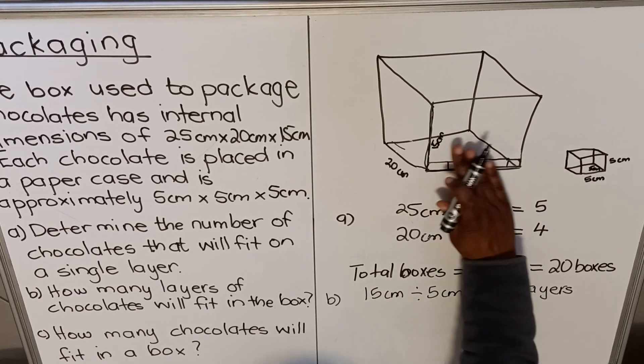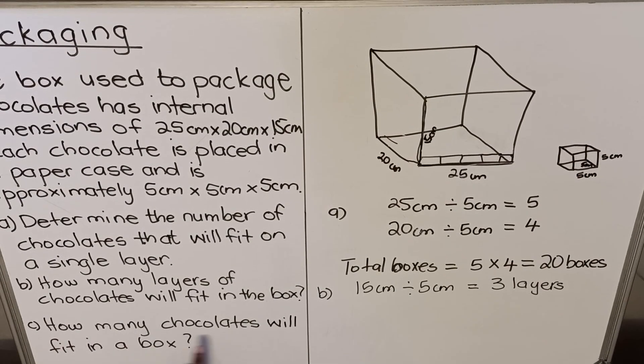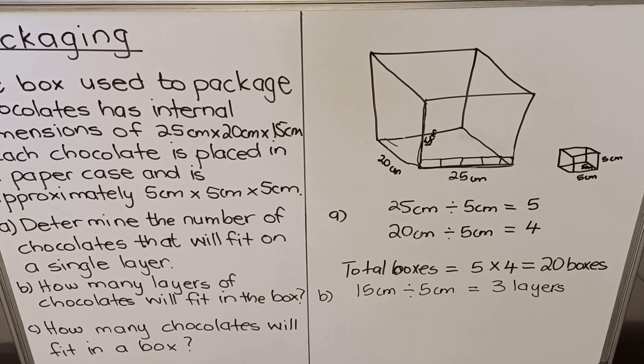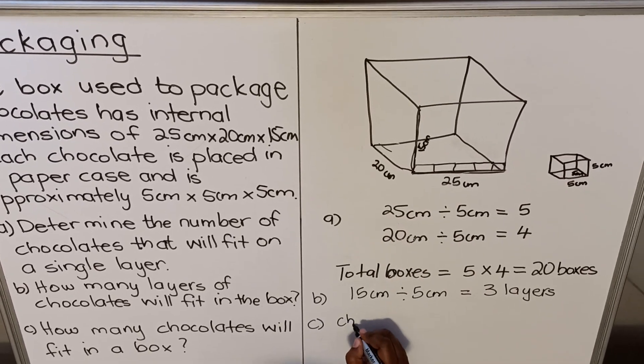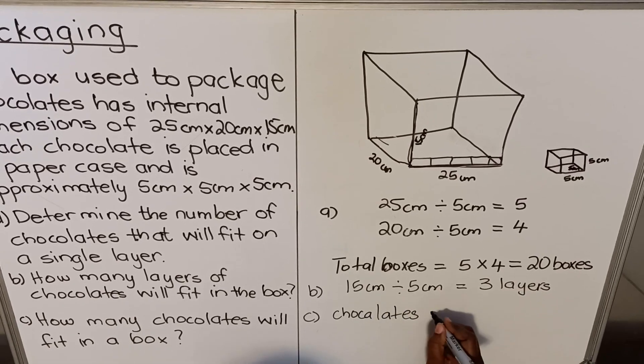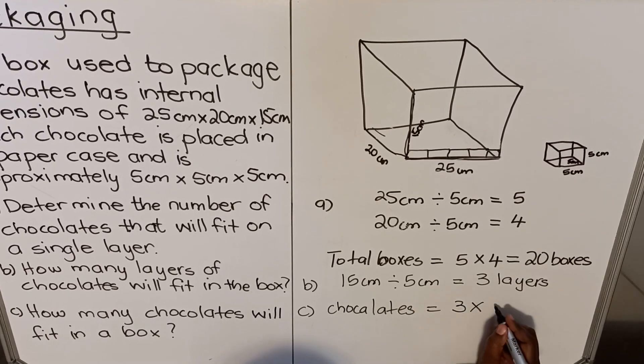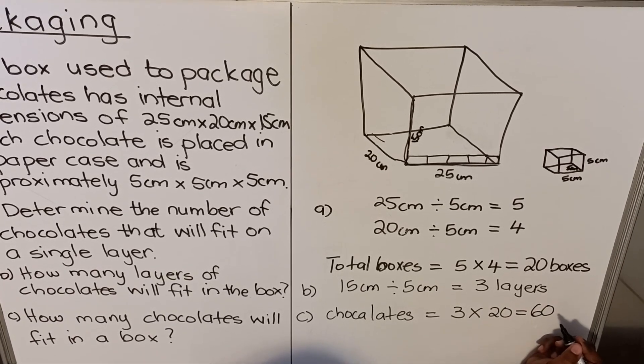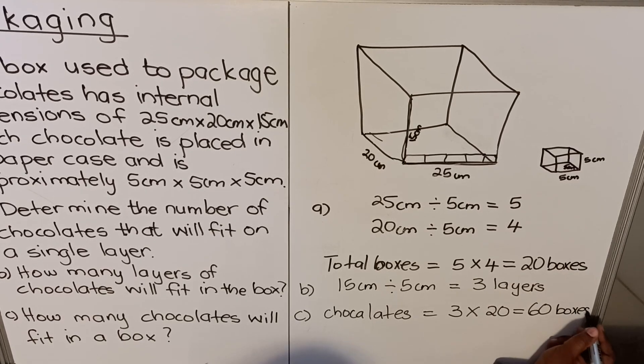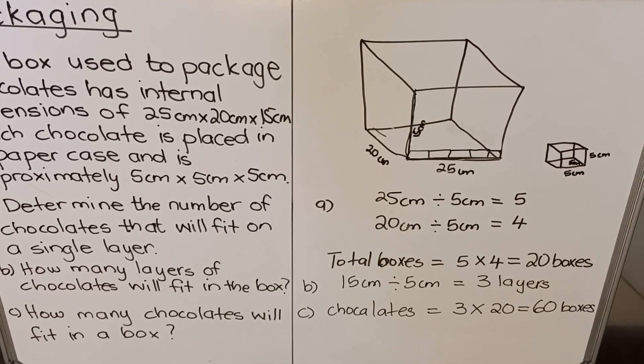Let's look at C. C, how many chocolates will fit in a box, in this box? How many chocolates will fit? Chocolates, we'll have I have three rows multiplied by each row has 20 chocolates. So in total I have 60 boxes of chocolates.